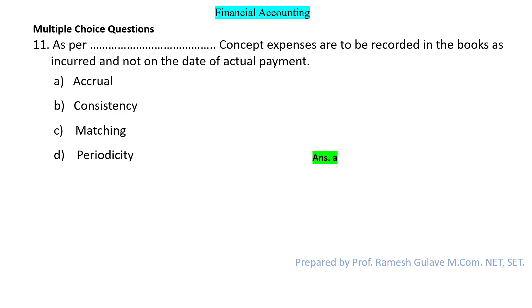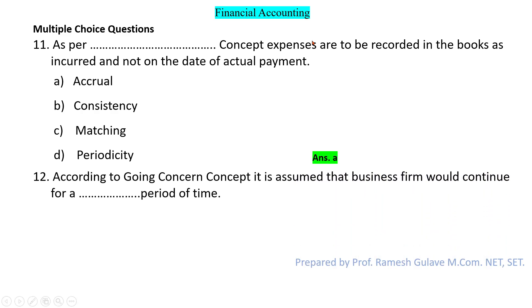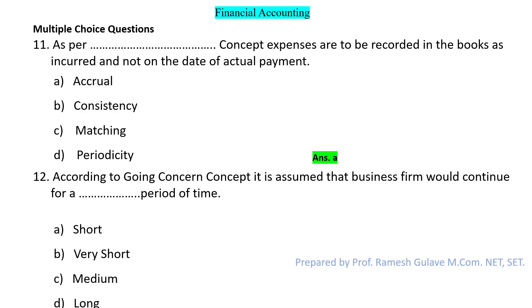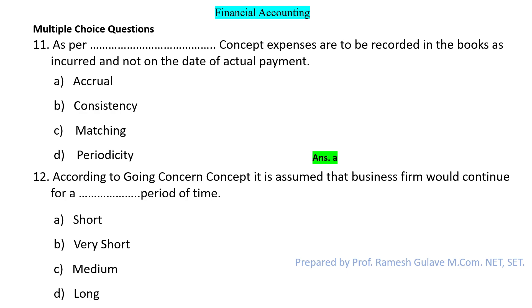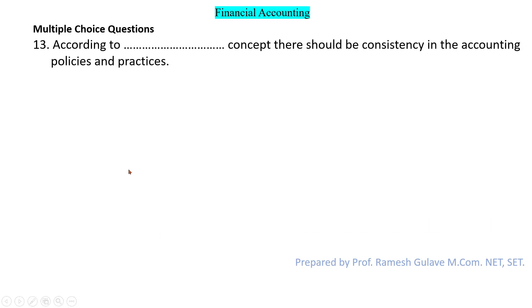The next question says: according to the going concern concept, it is assumed that the business firm would continue for a dash period of time. The going concern concept says that a business would continue for a long period of time. So here option D is the right answer.